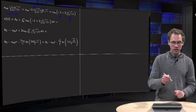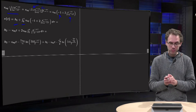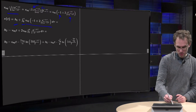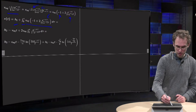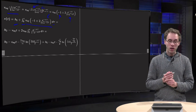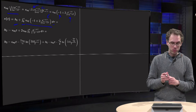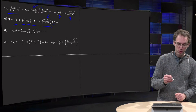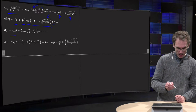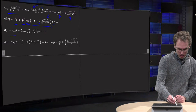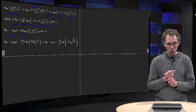x(t) equals initial height plus the integral from 0 to t of v dt̃. Integrating minus 1 from 0 to t is trivial — it's just a constant — giving minus v_equilibrium times t. Then you can factor out v_equilibrium for the remaining integral, which looks slightly awkward.